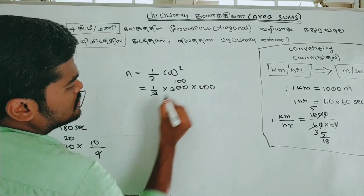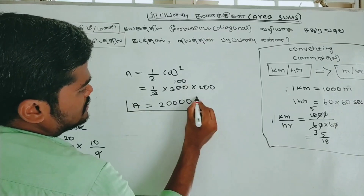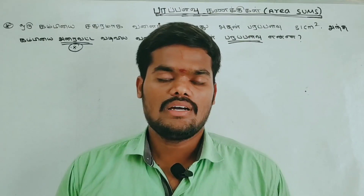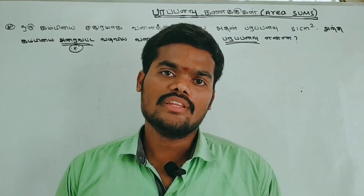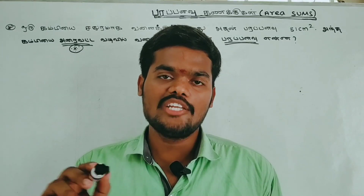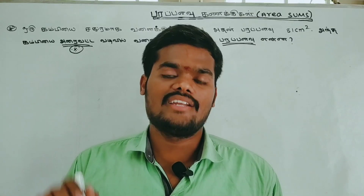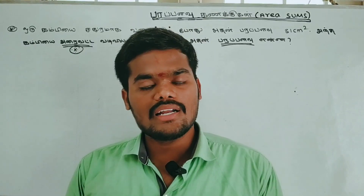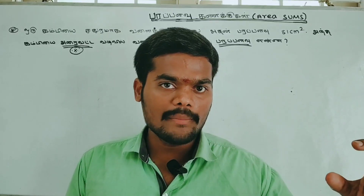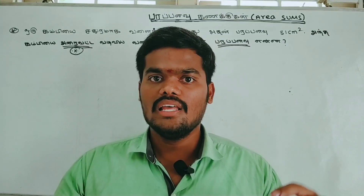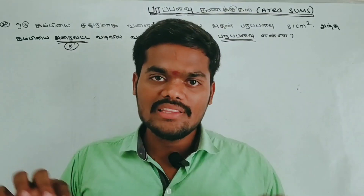We know the diagonal = 200 m. The area of a square using diagonal is: Area = (1/2) × diagonal² = (1/2) × 200 × 200 = 20,000 m². This is the required area of the square field.